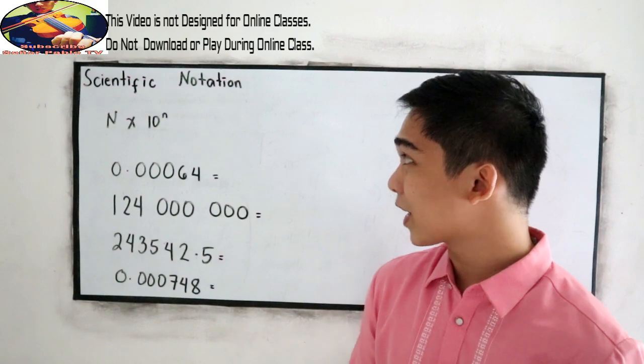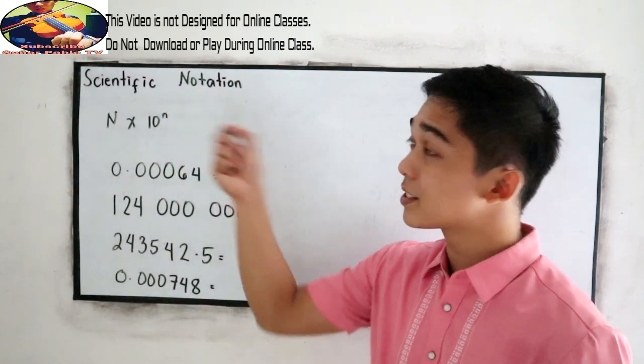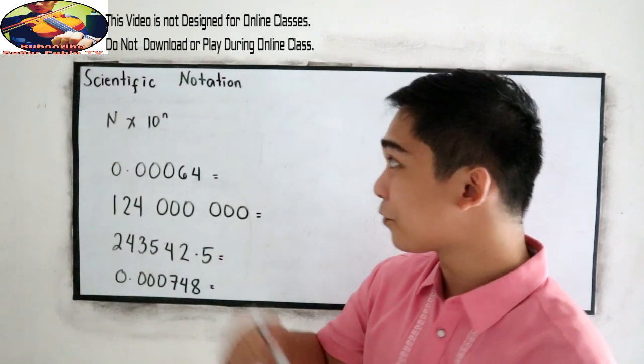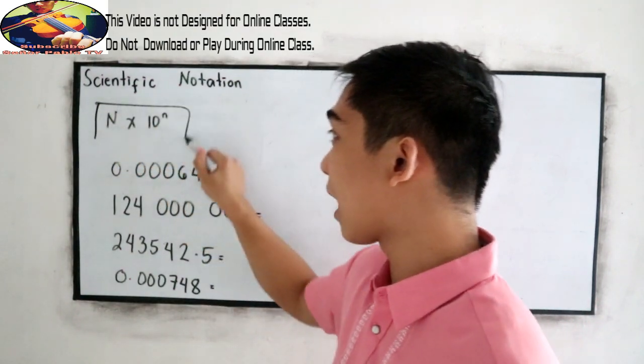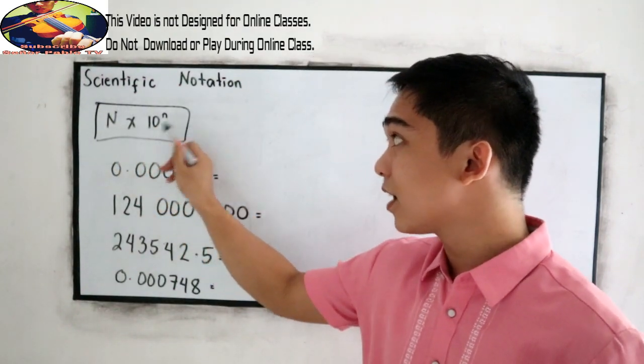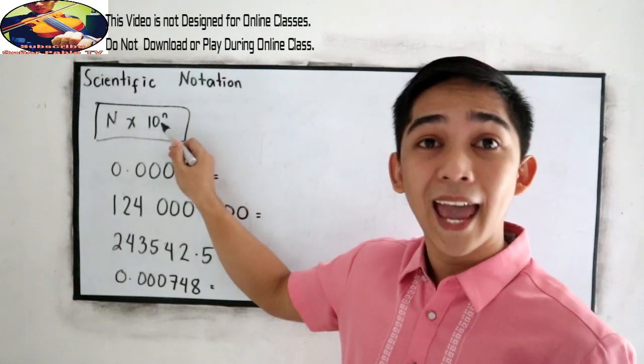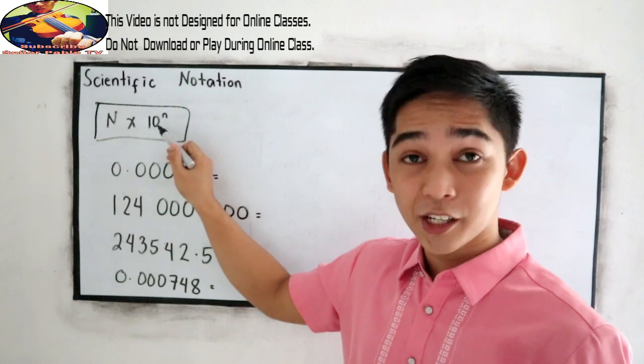So those numbers can be written in our scientific notation. So that is in the form N, capital letter N, times 10 raised to n, where the small n is our exponent.